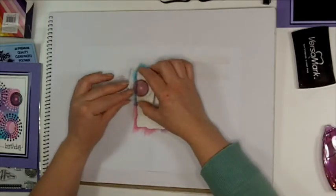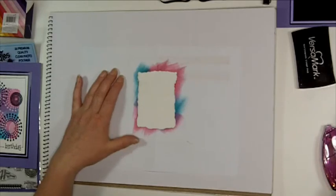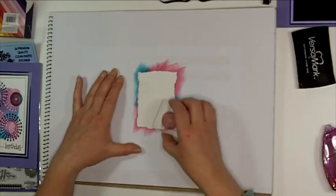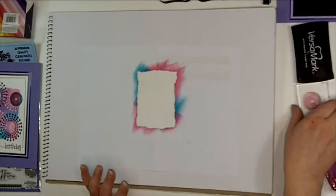I'll just go in with the smaller one. There we go. What we need to do now is just dry that off with a heat gun.